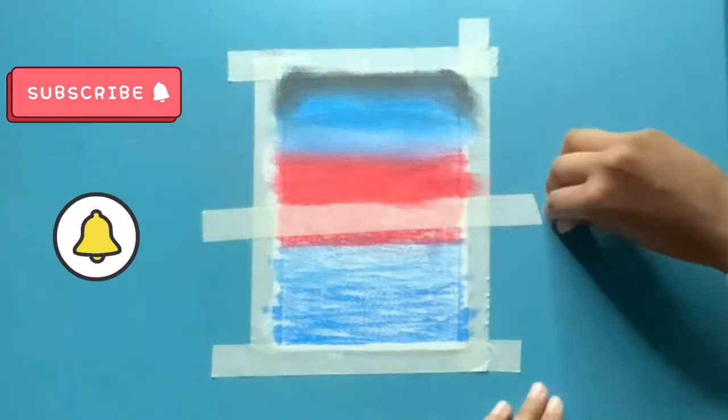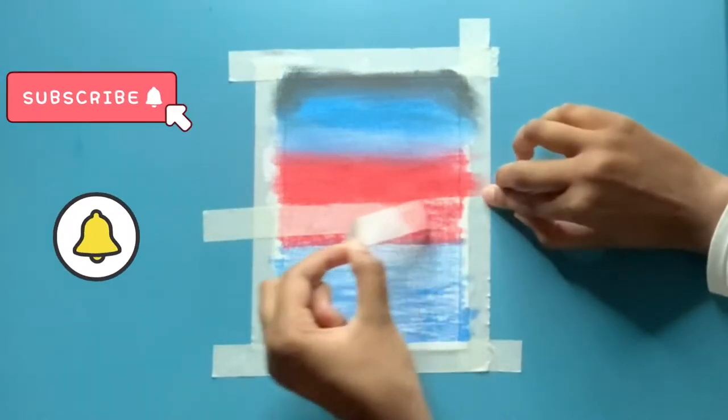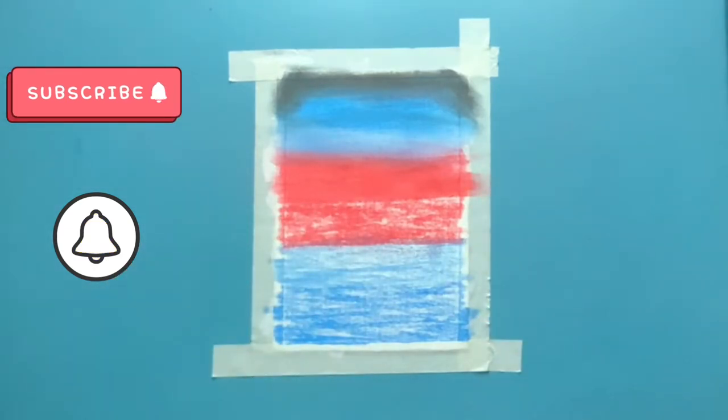Then I start blending the top area with my fingers, but you could also use tissue paper. Once done, I repeat the same step to the bottom.